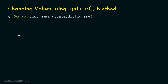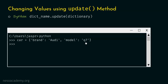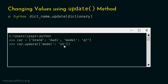Again, we will consider the same car dictionary and we want to update the value to S5. For this, we type: car.update({'model': 'S5'}). The dictionary inside update contains the key whose value we want to change — in this case the key is 'model' — and the new value S5. Now let's hit enter and type car to check whether the dictionary is updated. We will get our updated dictionary with brand Audi and model S5.